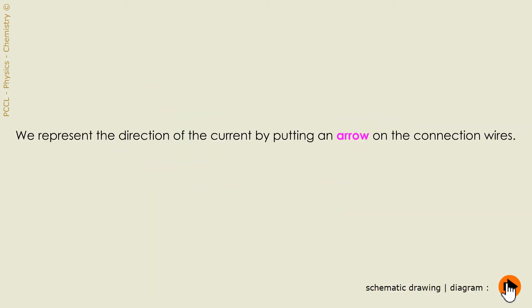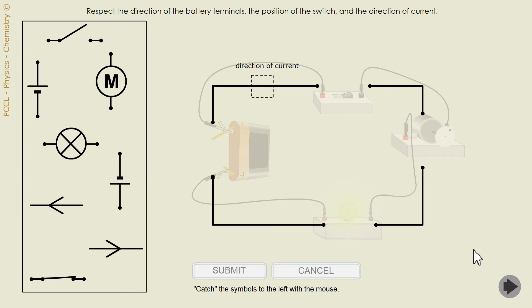The current is represented by an arrow. And we are offered here to schematize the circuit used. So, with the engine.